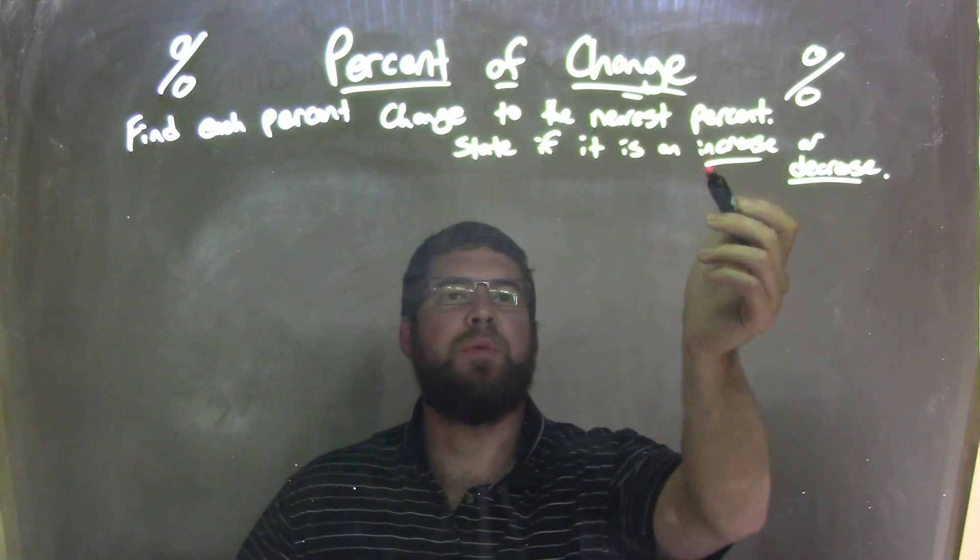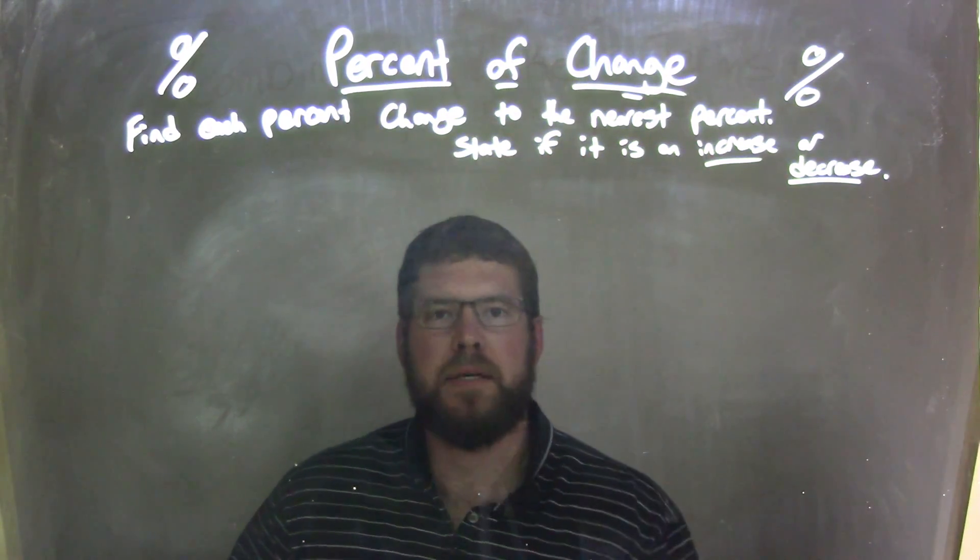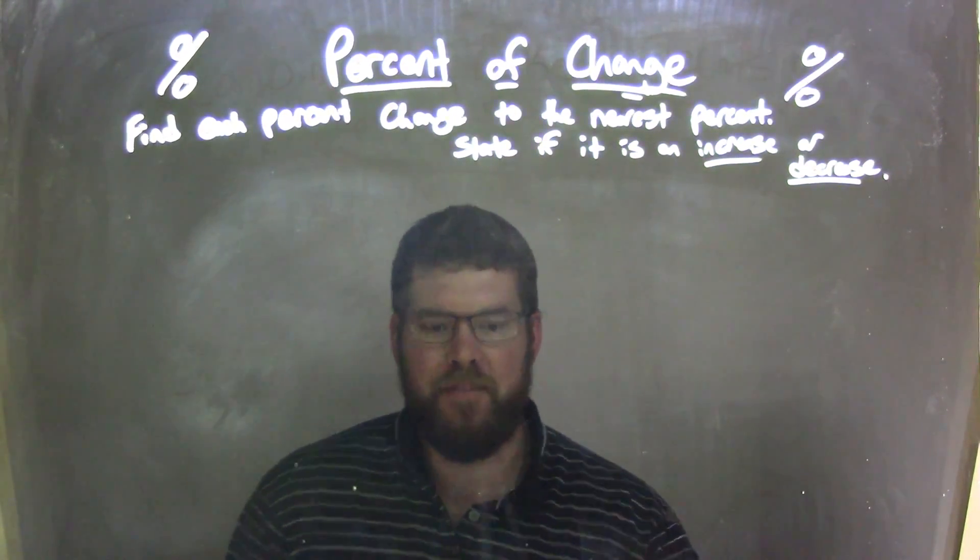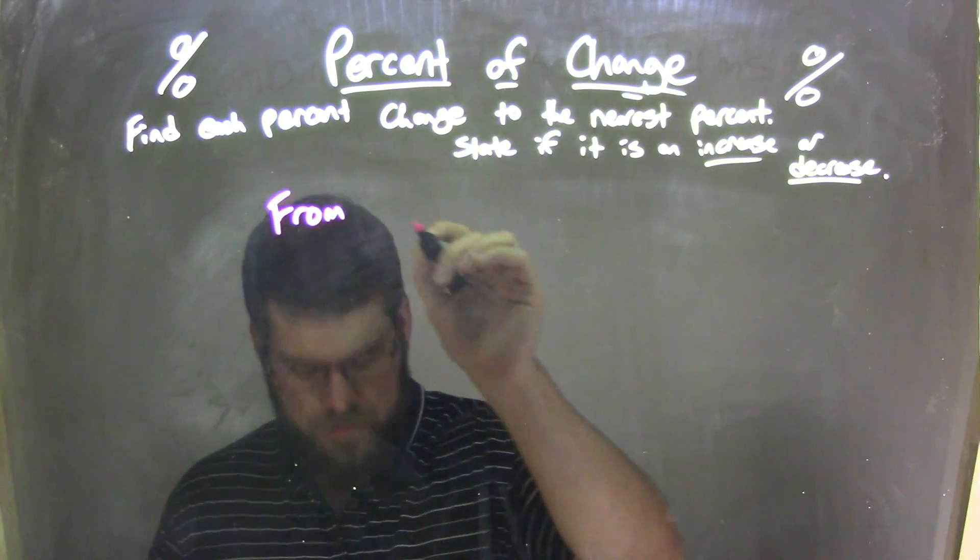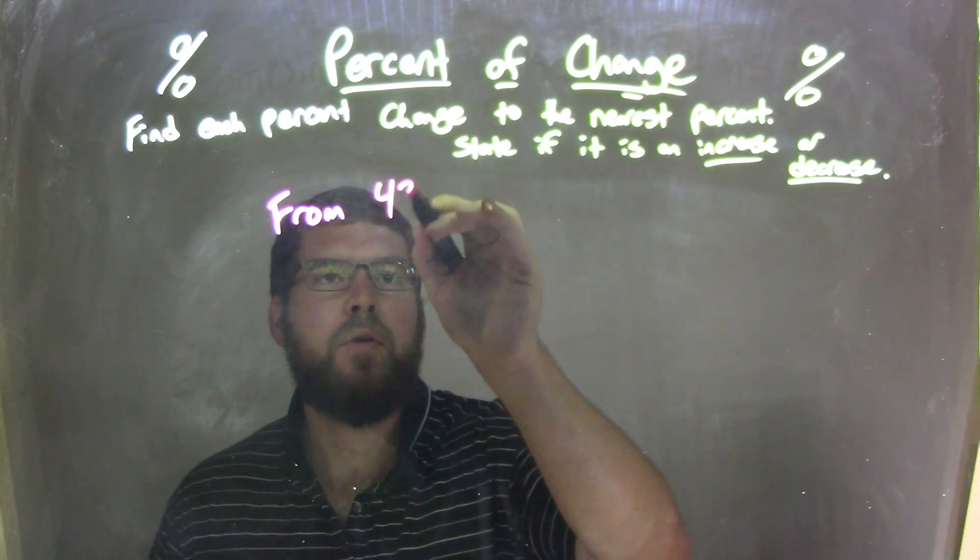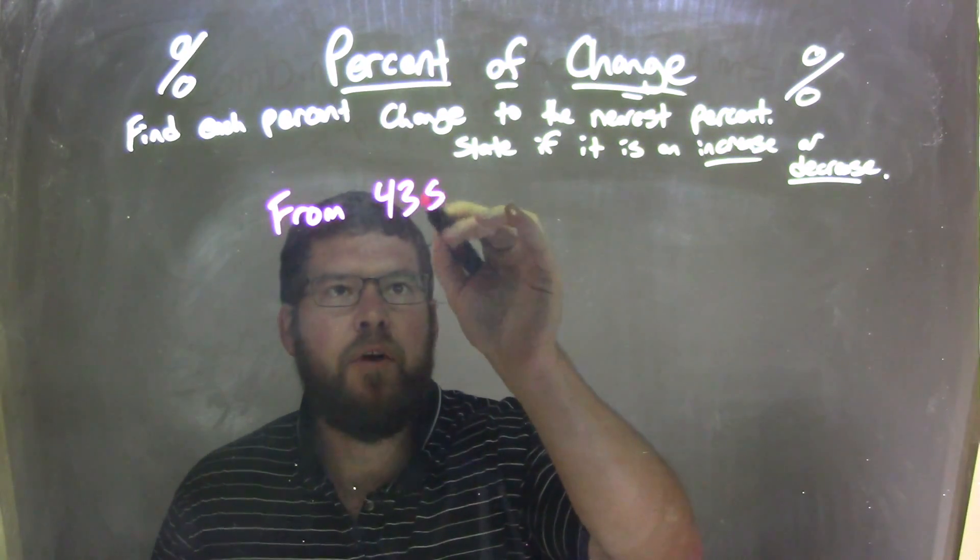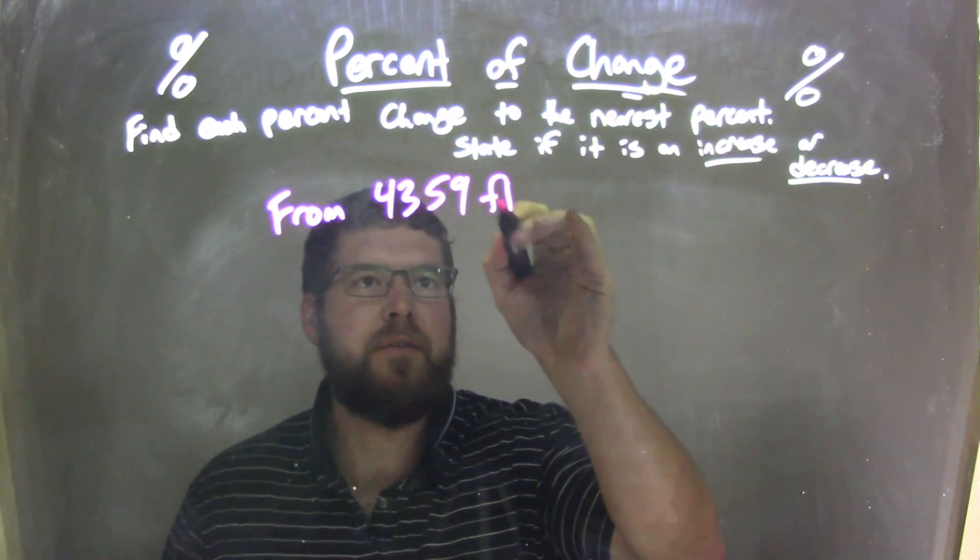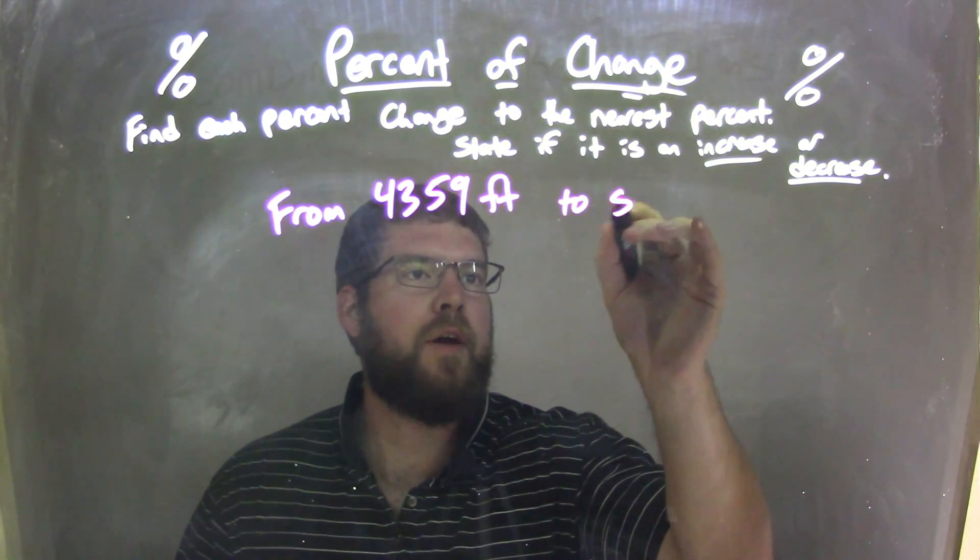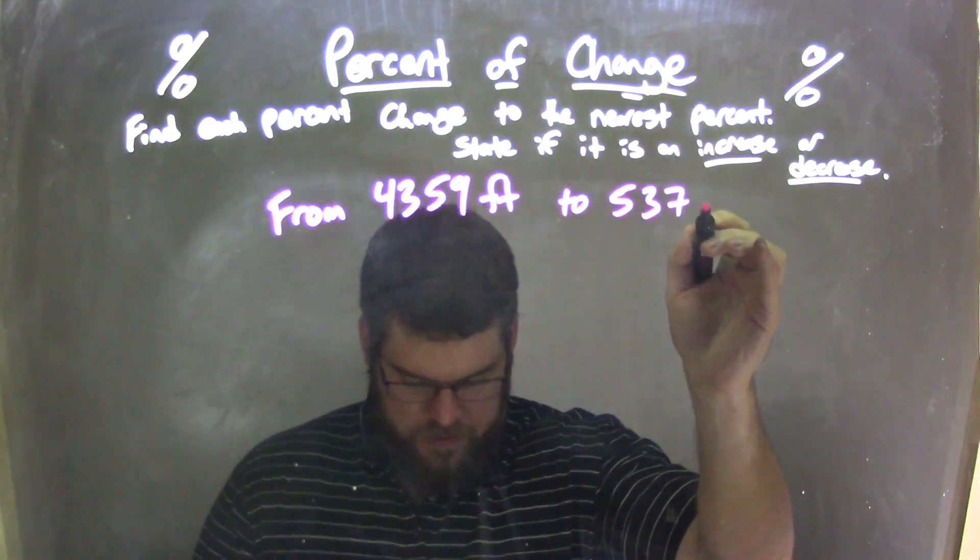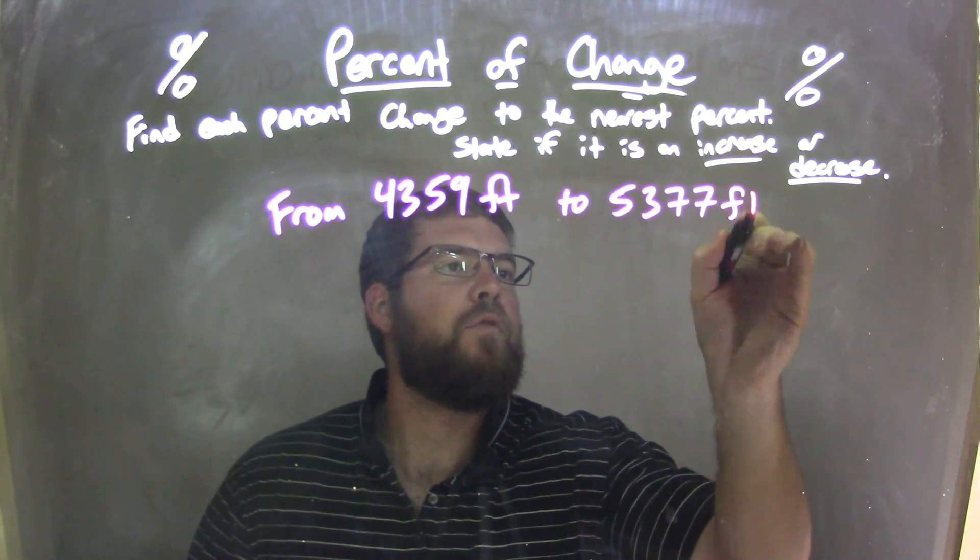We're going to find each percent change to the nearest percent and state if it's an increase or a decrease. So if I was given this problem from 4,359 feet to 5,377 feet.